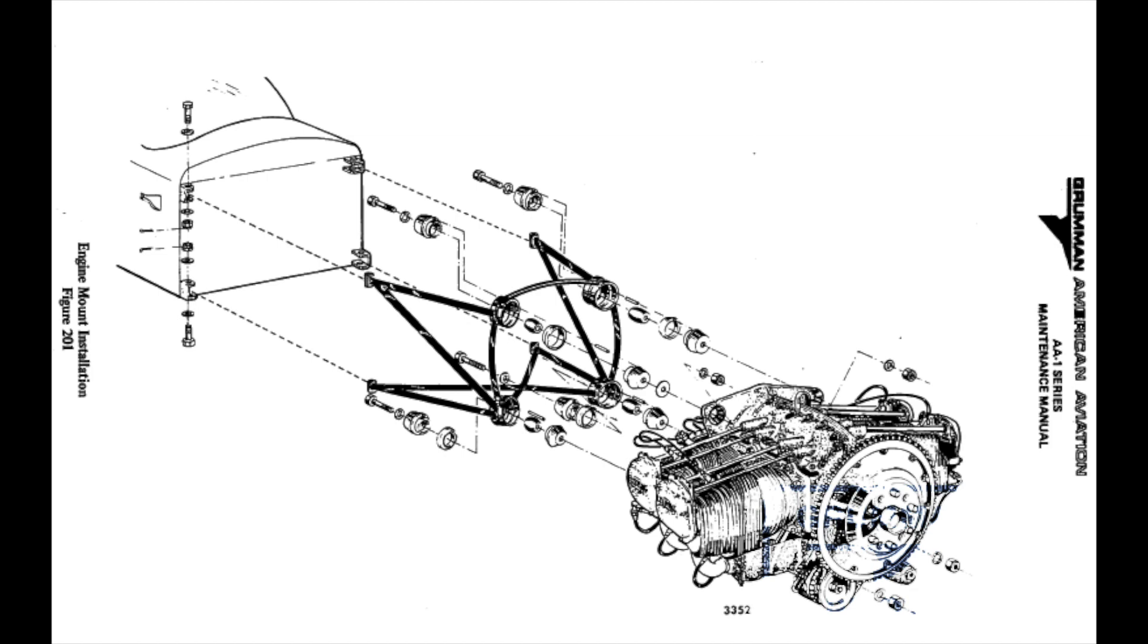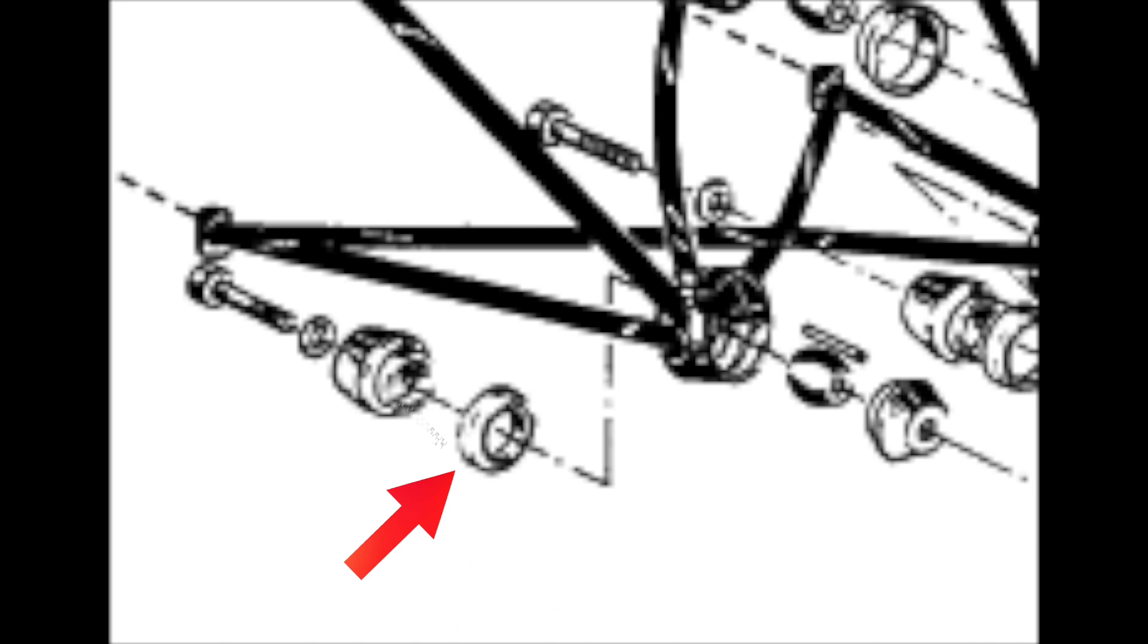Here's an exploded view and you can start to see that it gets really kind of complicated. But what we're really interested in are the spacers. Notice that the spacer on the top is before the motor mount and the spacer on the bottom is after the motor mount. That will give you the proper alignment of your engine as it hangs in the stock dynafocal mount.